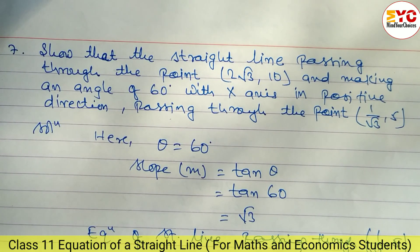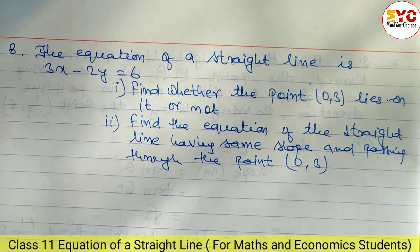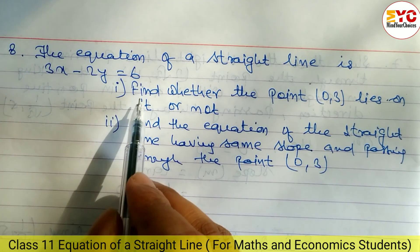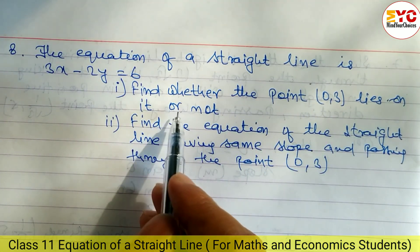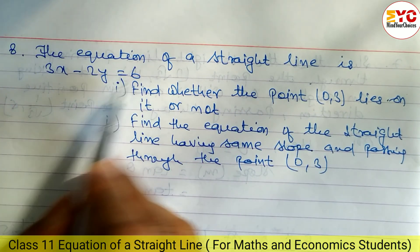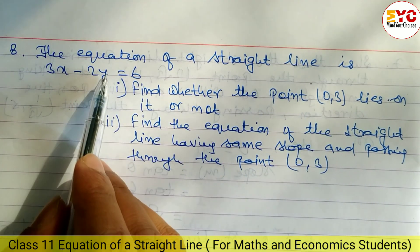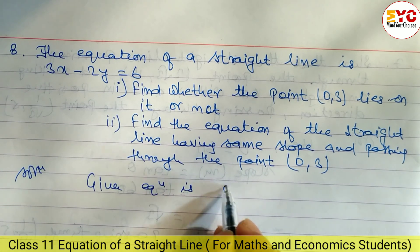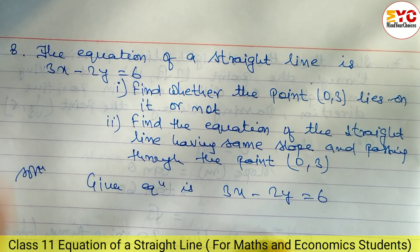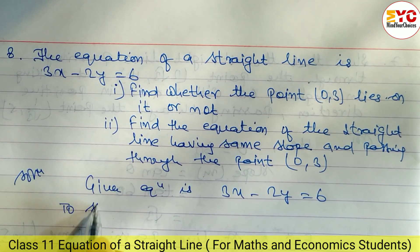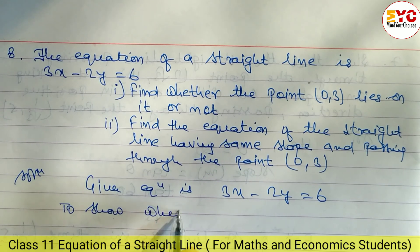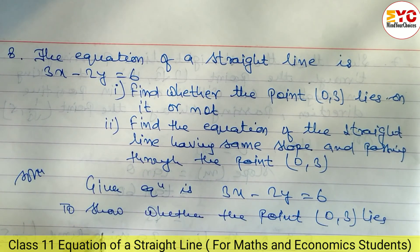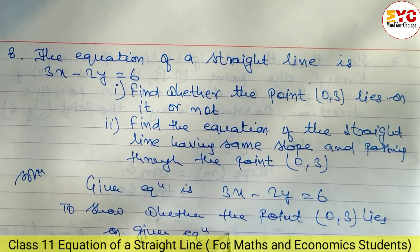If you understand, please hit the like button. Now look at question number 8. The equation of a straight line is 3x - 2y = 6. Part 1: find whether the point (0, 3) lies on this line or not.